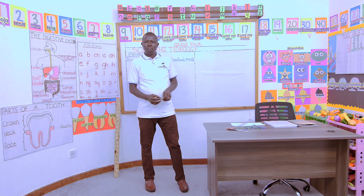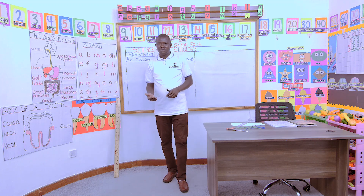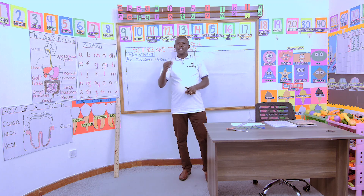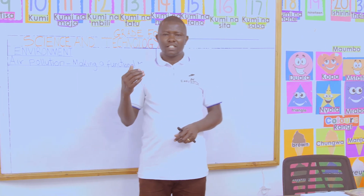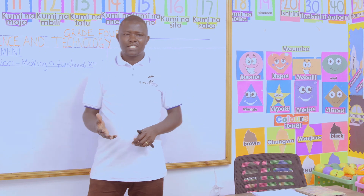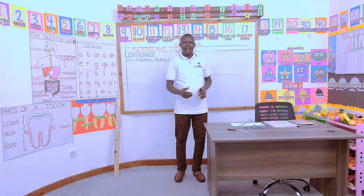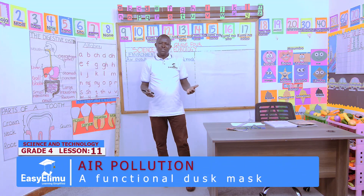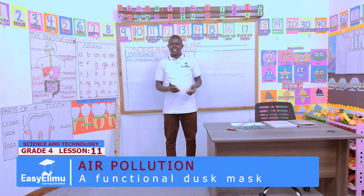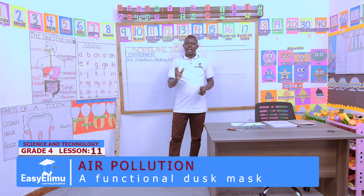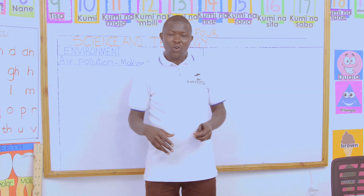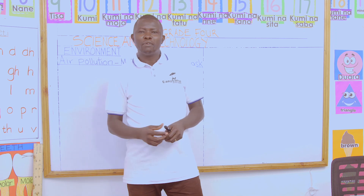How to make a functional mask. Before we continue, can we remind ourselves how we can reduce air pollution? On our previous lesson, we had learned how to reduce air pollution. Wangari, can you remind us what we said about reducing air pollution? Correct — we said we can sprinkle water on dusty places before we sweep.